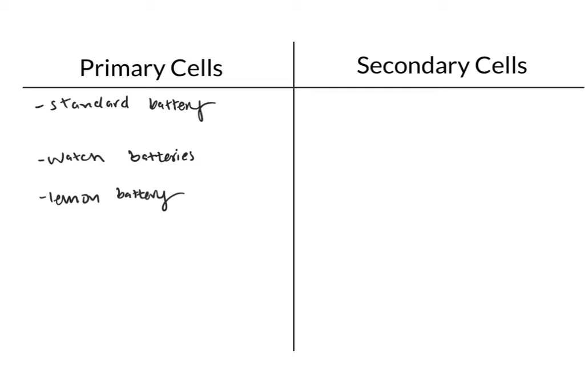So now let's talk about secondary cells. One really common example of a secondary cell is your computer battery. A portable computer like your laptop would really not be very useful if you couldn't recharge its battery. Think about how often your computer dies, and imagine having to buy a brand new battery every single time that happened.